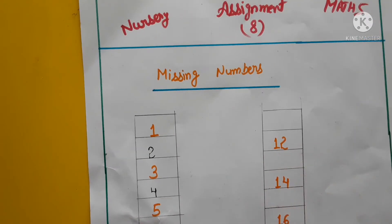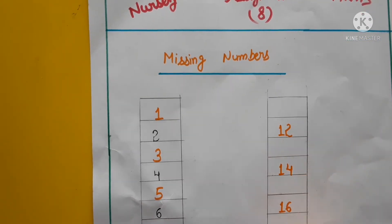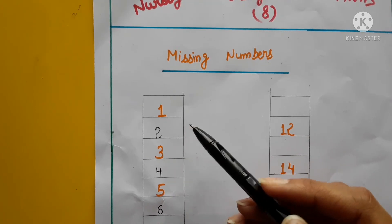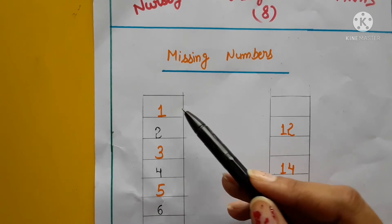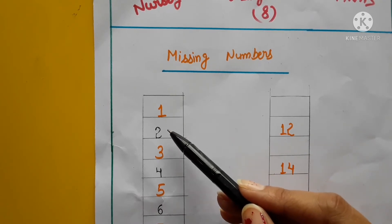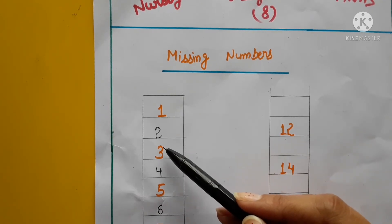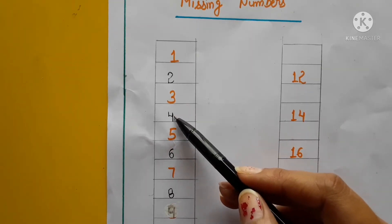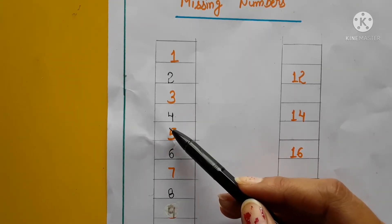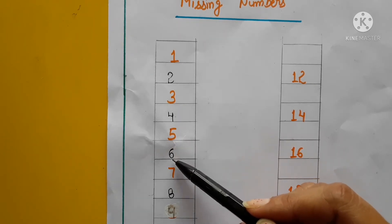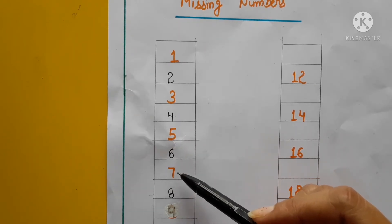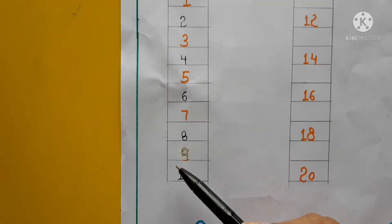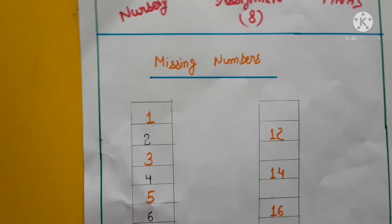Yeh dekho bachya aache se. Yeh hai na, 1 se 10 tak missing numbers they. 10 mein se maine one mention kiya tha. Or 2 nahi tha. 1 ke baad kya aayega? 2, and 2 ke baad 3. 3 mention hai. 3 ke baad aayega 4. 4 likhi hai humane. 4 ke baad 5. And 5 ke baad kya aata hai? 6. 6 ke baad 7, then 8, 9, and 10.